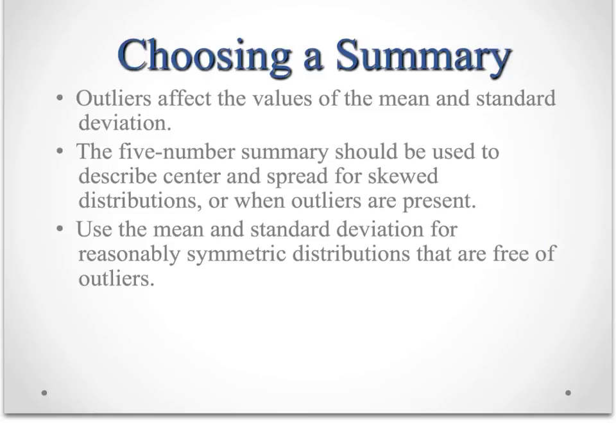So if you have a skewed distribution or a distribution with outliers, you want to use a five number summary to describe your center and your spread. The times that you would use the mean and the standard deviation are when you have a reasonably symmetric distribution that doesn't have outliers.